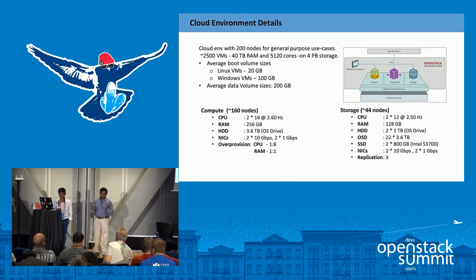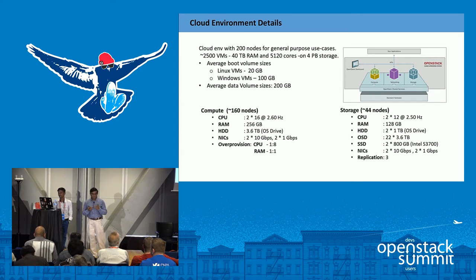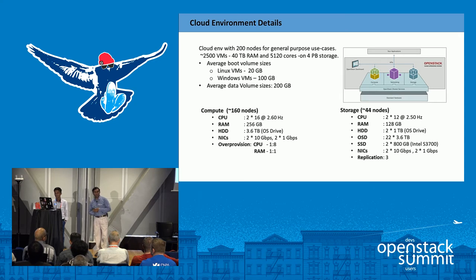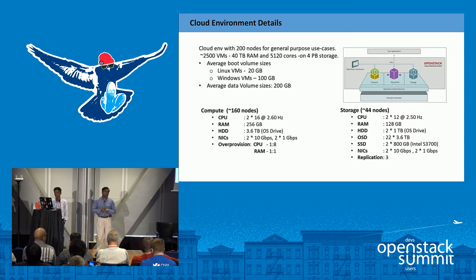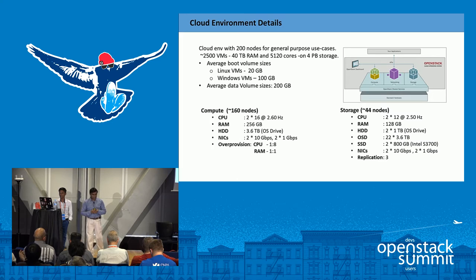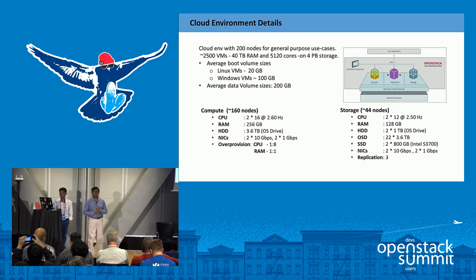Before all my recommendations, this is the setup we are using. Typically we have a general purpose cloud with 200 nodes. We are using it for compute, block storage, and object storage as use cases. Currently we are running approximately 2,500 VMs, with 40 TB RAM and 5,000 CPU cores.